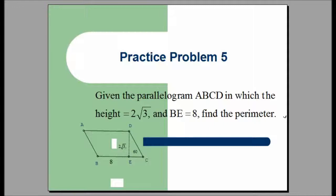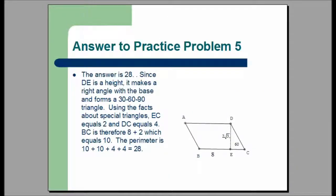In practice problem five, we're given parallelogram ABCD in which the height equals 2 square root of 3 and BE equals 8. Find the perimeter. The answer is 28. DE is the longer leg of a 30-60-90 triangle and it's 2 square root of 3. Using the rules of special triangles, the shorter leg EC is 2 and the hypotenuse DC is 4. BE is 8 and EC is 2, so segment BC is 10; similarly, segment AD is 10 as well. Segment DC is 4 and segment AB is 4 as well. Adding those up gives 10 plus 10 plus 4 plus 4, which equals 28.